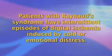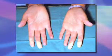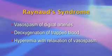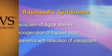Patients with Raynaud syndrome have intermittent episodes of digital ischemia induced by cold or emotional distress. The classic Raynaud's attack consists of blanching of the fingers followed by bluish discoloration and subsequent hyperemia. This is thought to reflect vasospasm of the digital arteries, deoxygenation of the trapped blood, and subsequent hyperemia with relaxing of the vasospasm.